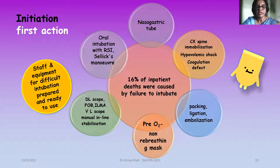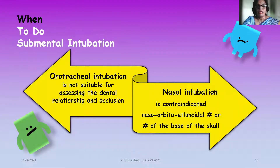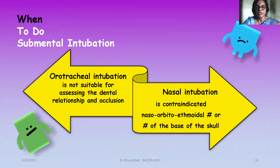When intubation is planned, a videolaryngoscope, fiberoptic scope, intubating LMA, or videolaryngoscope must be prepared and ready to use — no excuses. Manual in-line stabilization must be prepared, and oral intubation with rapid sequence intubation with or without Sellick's maneuver must be planned. Orotracheal intubation is not suitable for mandibular fracture surgery because it interferes with dental occlusion, while nasal intubation is contraindicated in naso-orbito-ethmoid fractures or fractures at the base of the skull.